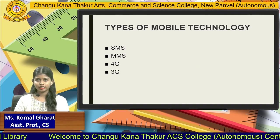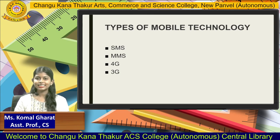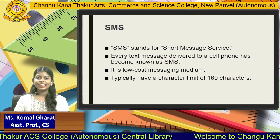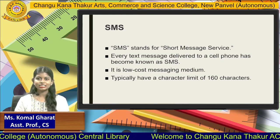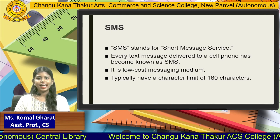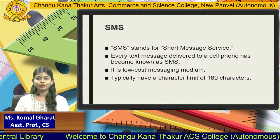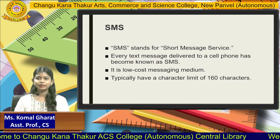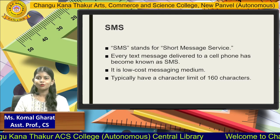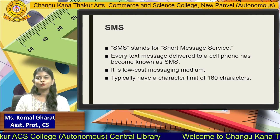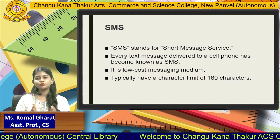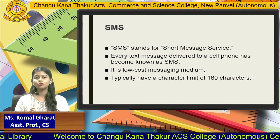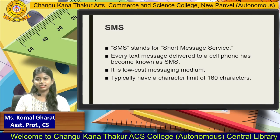There are some types of mobile technologies. The first one is SMS, the second one is MMS, and the third is 4G and 3G. First we will see SMS. SMS stands for Short Message Service. Every text message delivered to a cell phone has become known as SMS. It is a low-cost messaging medium that typically has a character limit of 160 characters. If you want to send a text-based message, you can use SMS because through it you can send a message easily.